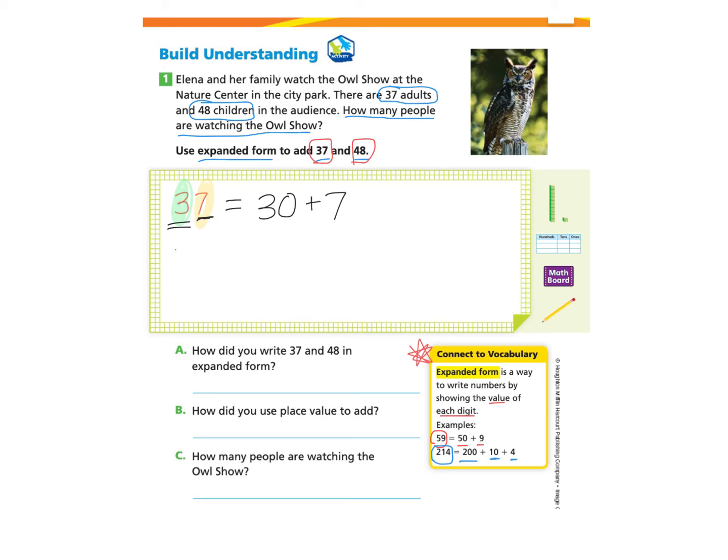Now let's take a look at the other number 48. We notice that there are three groups of 10 and 8 in the ones column. So we know that 48 equals 40 for the 4 tens plus the 8 ones. So 48 is really 40 plus 8.